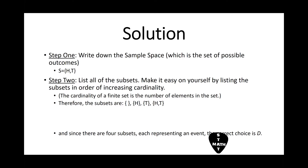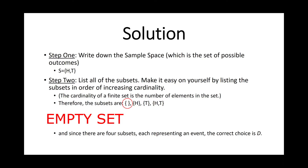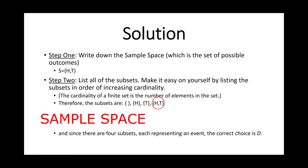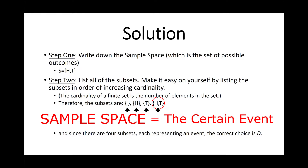Step 2: List all of the subsets. Make it easy on yourself by listing the subsets in order of increasing cardinality. The cardinality of a finite set is the number of elements in the set. Therefore, the subsets are: the empty set, {heads}, {tails}, and {heads or tails}. The first set is called the empty set, which represents the impossible event. The last set is the sample space, which represents the certain event. And since there are four subsets, each representing an event, the correct choice is D.